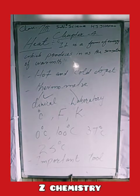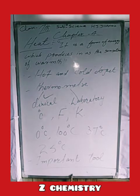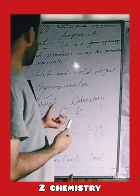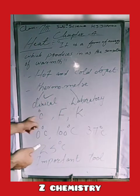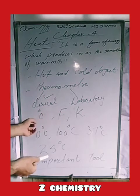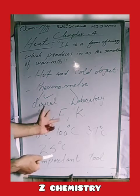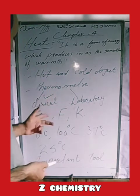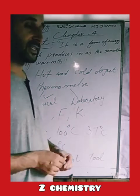These thermometers have gradings or numbers. These numbers start from 0 degree to 100 degree Celsius. There are different types of thermometer scales: Celsius scales, Fahrenheit scales, and Kelvin scales.